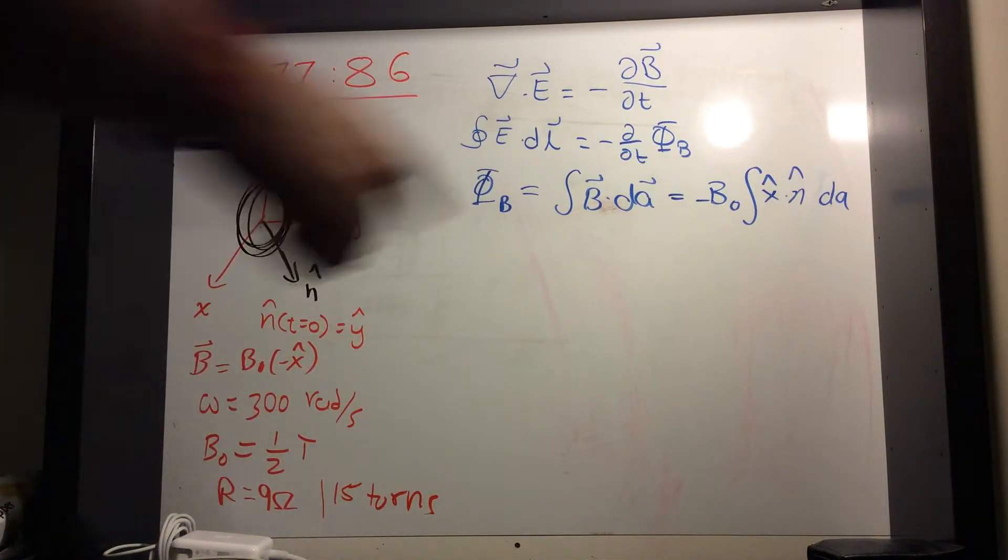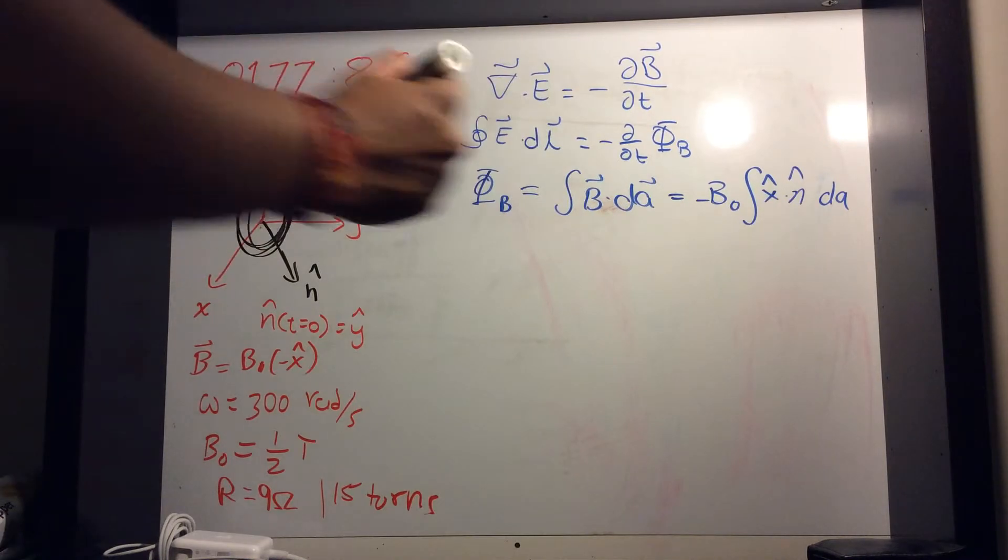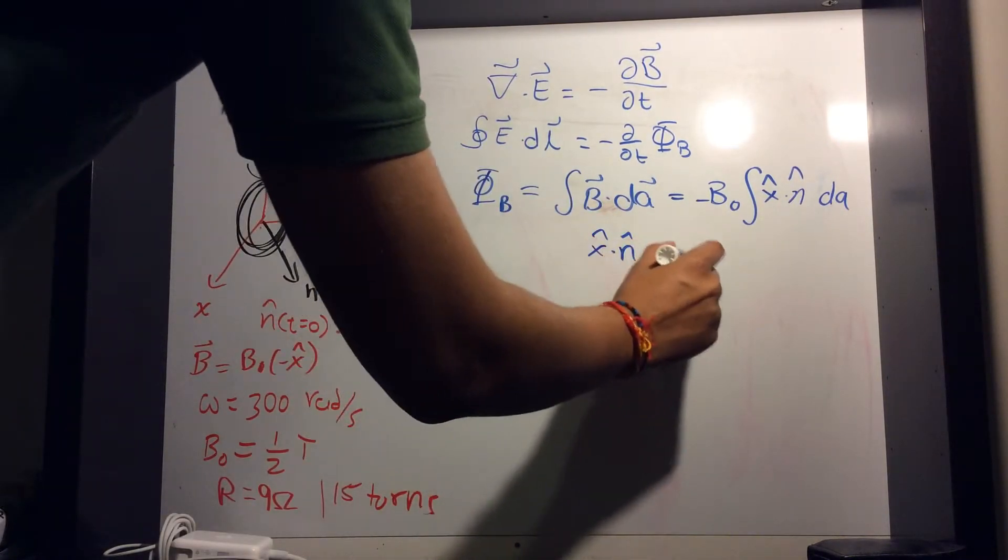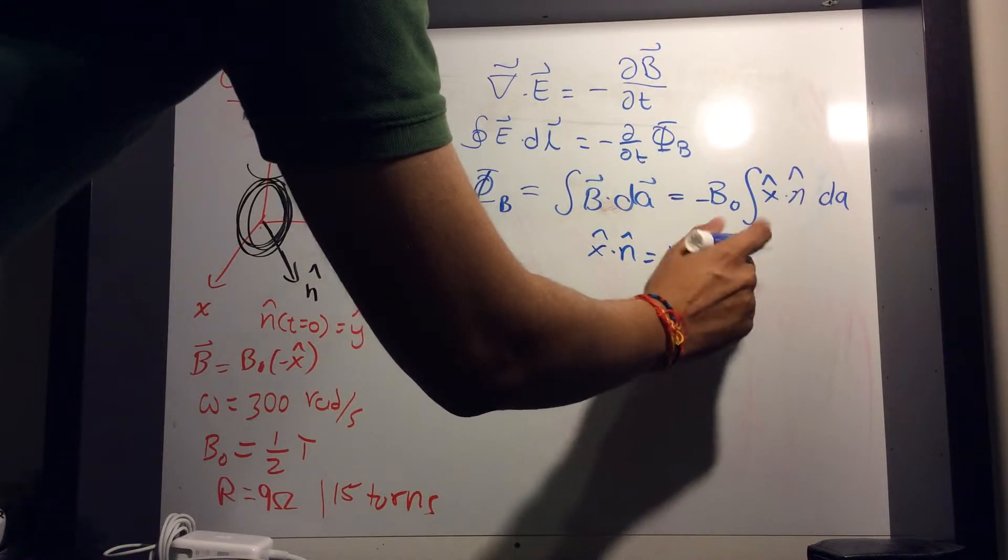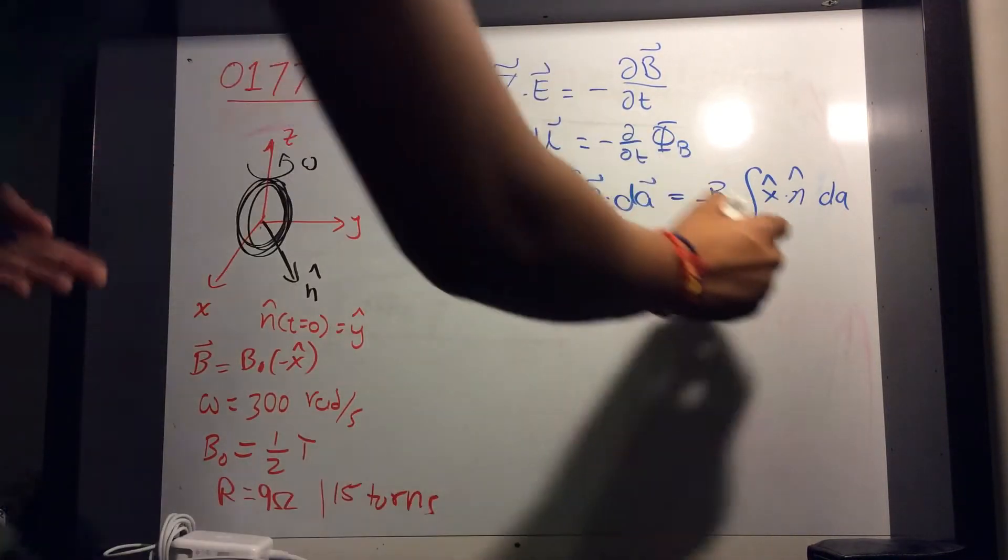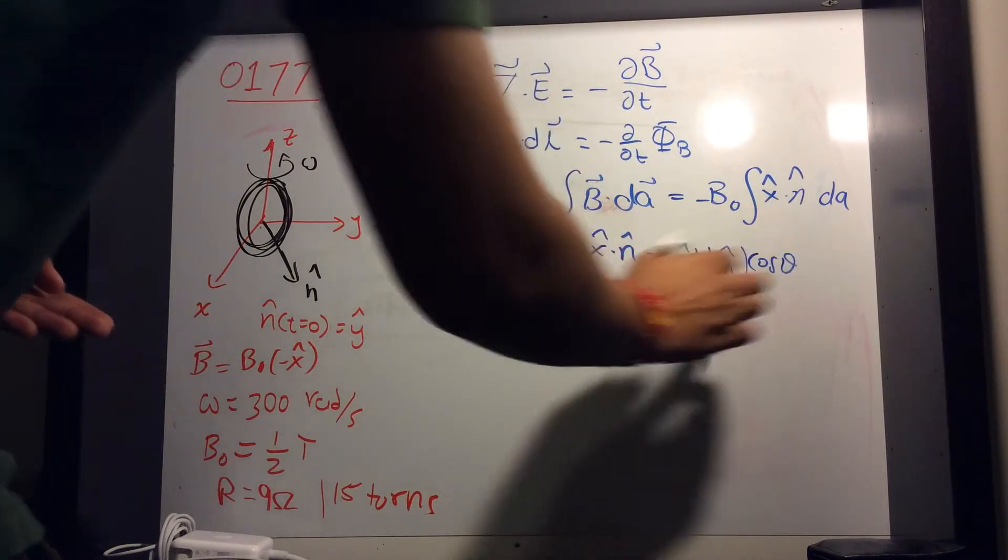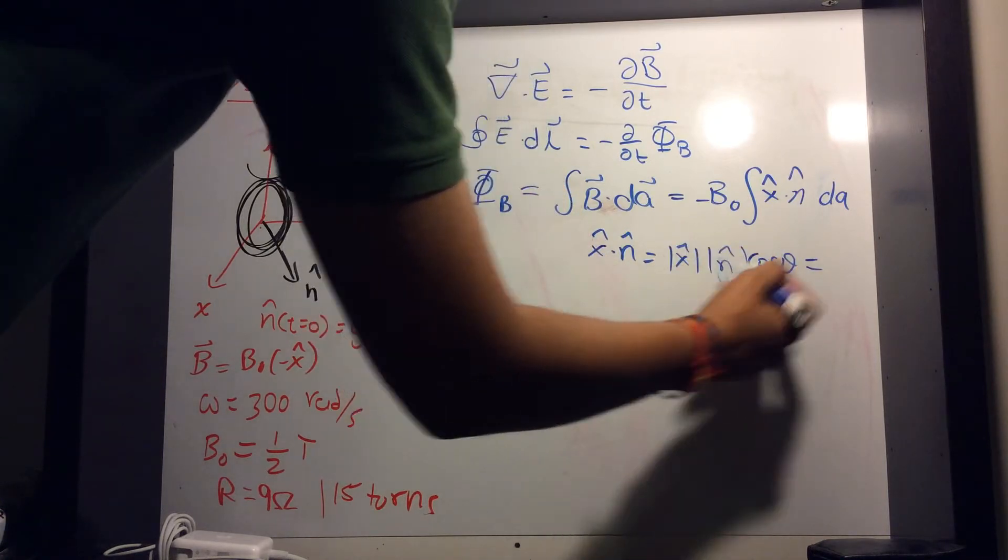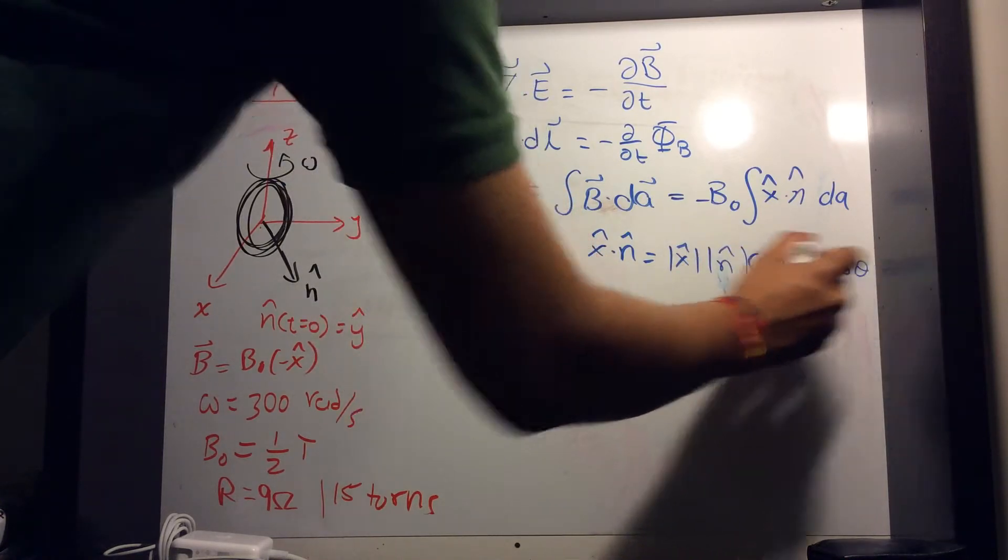Now what is that angle between them? We know that y-hat dot n-hat is equal to the magnitude of y-hat, magnitude of n-hat, times the cosine of the angle between them. Remember, these are normal vectors, so these are just one, so it's just cosine of the angle between them.